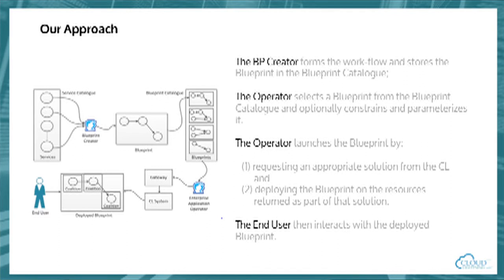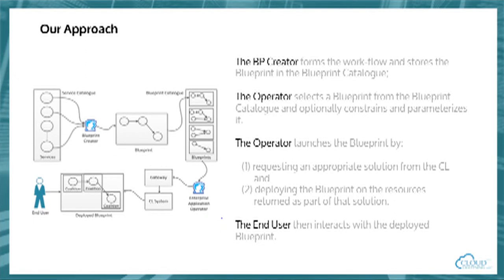That constrained blueprint is then sent to our system through a gateway. Our system will discover the appropriate resources for that blueprint, and the services will be deployed on top of those resources. Once deployment happens, the end user will interact with the deployed service. So the customer is saying what they want — developing a service level agreement — and the provider is saying how that will be done. We're giving control to the provider to say exactly how it will be done.